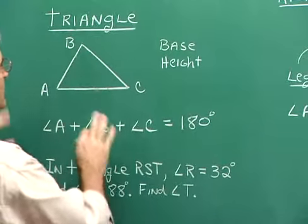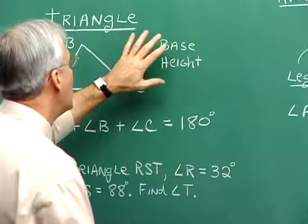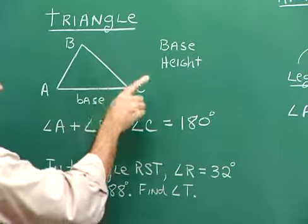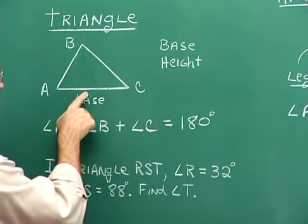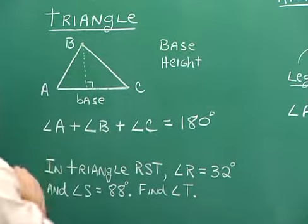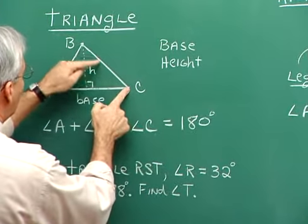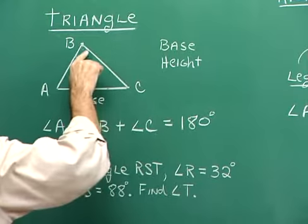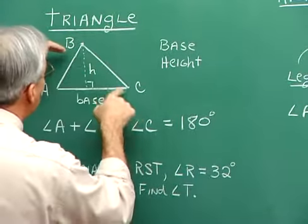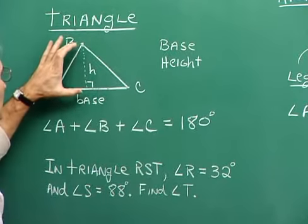A triangle has a base and a height. The base refers to any side — usually the bottom side. The height is the shortest, perpendicular distance from the base to the opposite vertex. There are several base-height combinations: BC as the base with height from BC to A, or AB as the base with height from AB to C. Generally, the bottom side is depicted as the base and the vertical segment as the height.